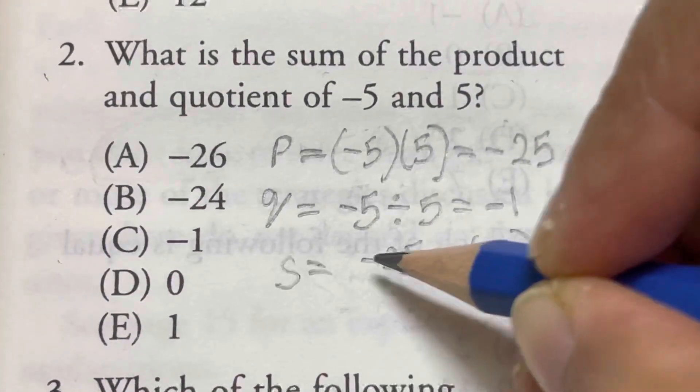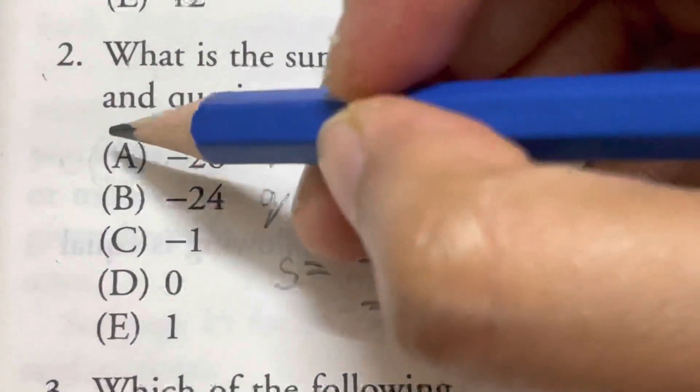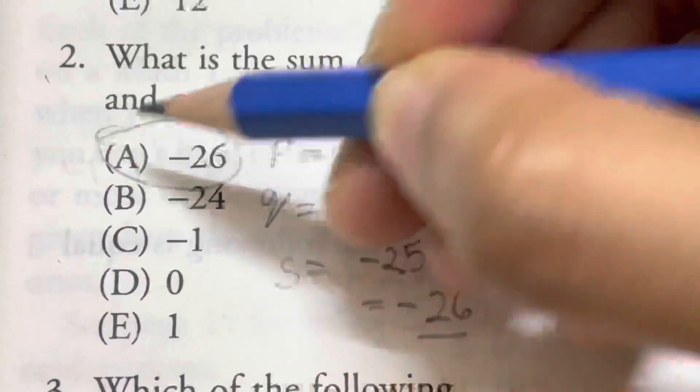So that's just minus 25 minus 1. That's minus 26. And that's your option A.